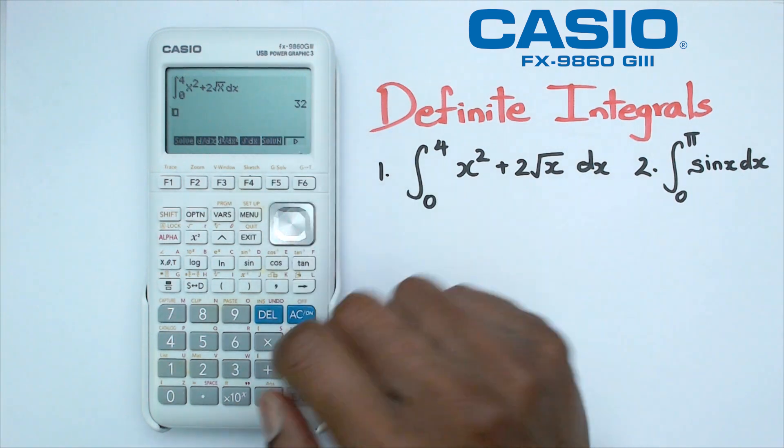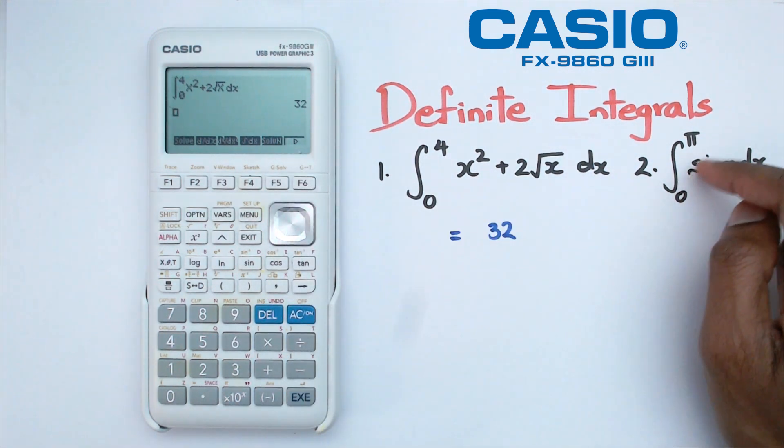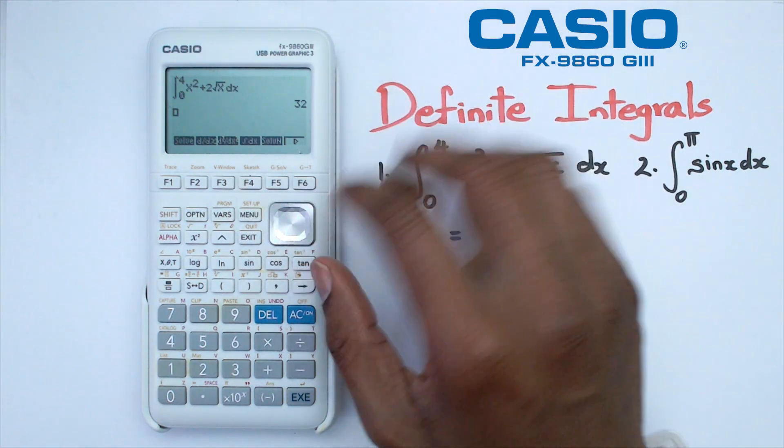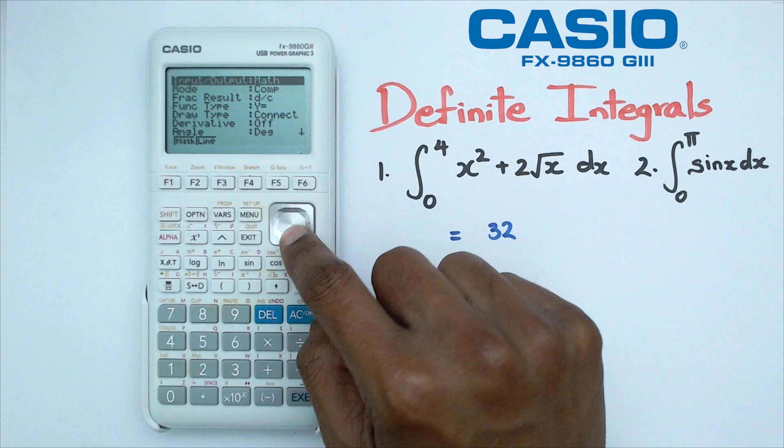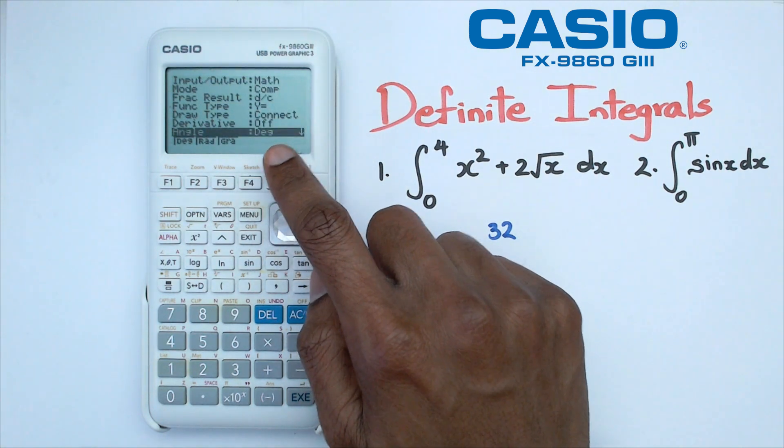For question two, the upper bound is π, so you want to make sure your calculator is in radians. Before doing this equation, we go into shift setup. As you can see, the angle is in degrees.